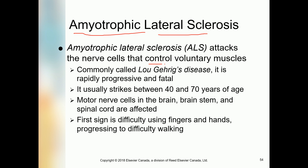ALS attacks the voluntary muscle movement beyond our control. It usually strikes between 40 and 70 years of age, which is the most common age range for diagnosis. Motor nerve cells in the brain, brain stem, and spinal cord are affected — since it involves nerve cells and nerve fibers, it is a neurological disorder.